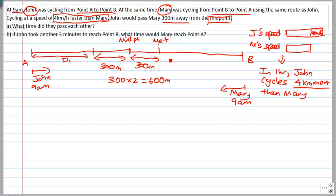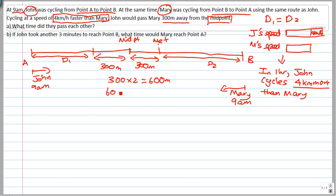In this particular scenario, since John's speed was four kilometers per hour faster, he would have been able to cycle 600 meters more than Mary, because this is the midpoint. Let's call this distance d1 — it's equivalent to distance d2, so d1 equals d2. Because John was cycling four kilometers per hour faster than Mary, he would have cycled a distance equivalent to Mary's distance plus 600 meters more. Since this is the midpoint, we multiply by two.